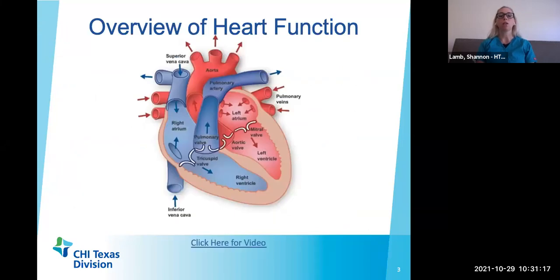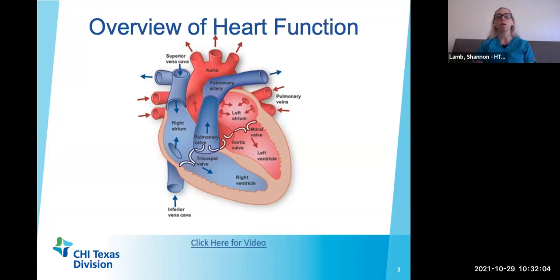The first thing we'll discuss is an overview of heart function. The heart has four chambers — two upper chambers known as the atria and two lower chambers known as the ventricles. Blood flows generally from the right side of the heart to the left side, moving from the atria into the ventricles. The atria fill and eject blood into the ventricles, and then the ventricles fill and eject blood either to the lungs or to the body. It's very important that our heart is in correct working order so that we're able to perfuse our lungs, remove waste, and also perfuse the rest of the body — the brain, the kidneys, the liver, and all of our end organs. Our end goal is always good cardiac output and end organ perfusion.